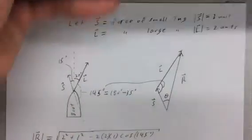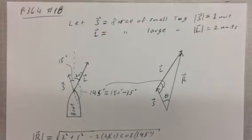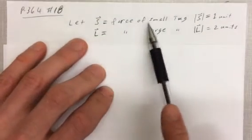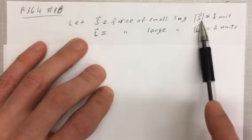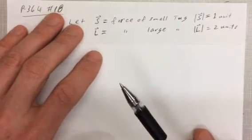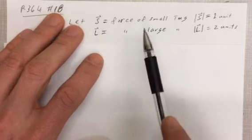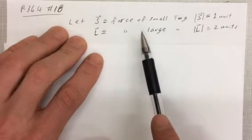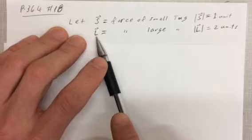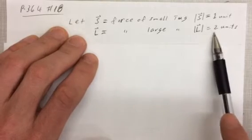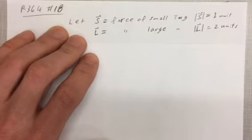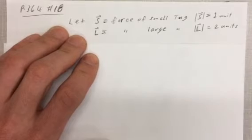Okay, so what we've got here is I let S, the vector S, be the force by the small tugboat where the magnitude of S is one unit. Okay, and the small tugboat is going off the port, the port is going to be off to the left. And the larger tugboat is going to be defined by vector L and it is going to have a magnitude of two units. It's said that it's twice as large, so we don't know what the force is, so we're just going to name it as one unit and two units.